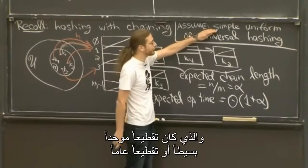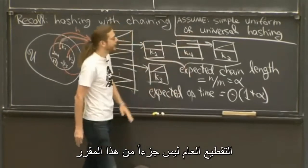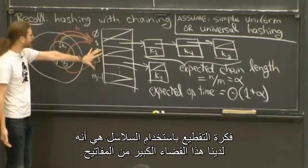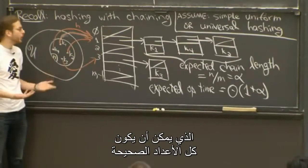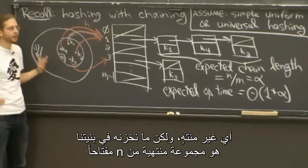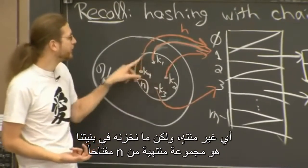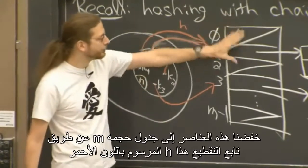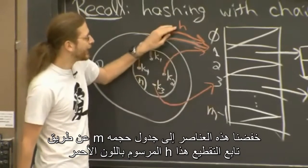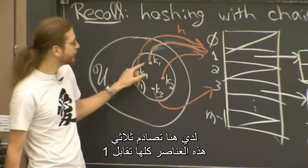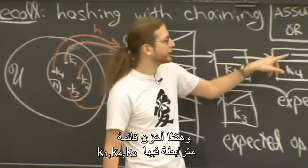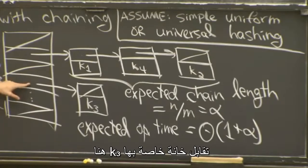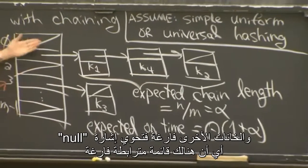The analysis we did was with simple uniform hashing. An alternative is universal hashing, which is not really in this class, but it's less weird. With hashing with chaining, the idea was we had this giant universe of all keys — it could be all integers, so it's infinite. But what we actually store is some finite set of n keys. We reduce that to a table of size m via hash function h. Here I have a three-way collision: three keys all map to one slot, so I store a linked list of k1, k4, and k2. k3 happens to map to its own slot, and the other slots are empty.